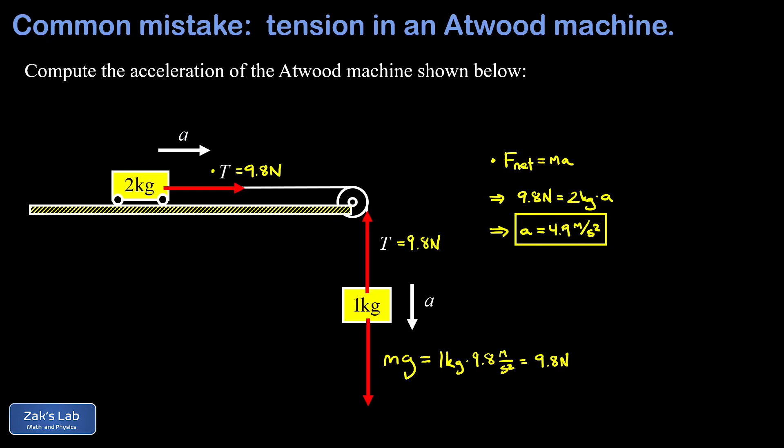Now this turns out to be the wrong answer because there was a concept error made right here where we said the tension was equal to mg on this one kilogram mass. If the tension was equal to mg here, the forces would balance on that mass and there would be no acceleration. So let's just start this thing over and we'll fix that problem and see how the problem unfolds.